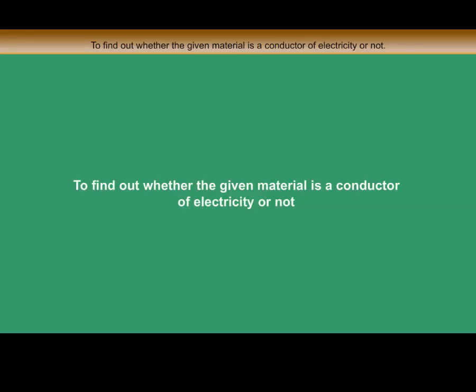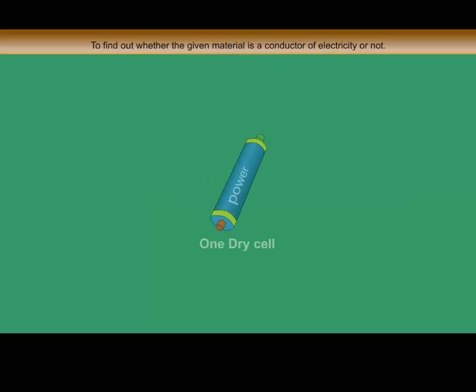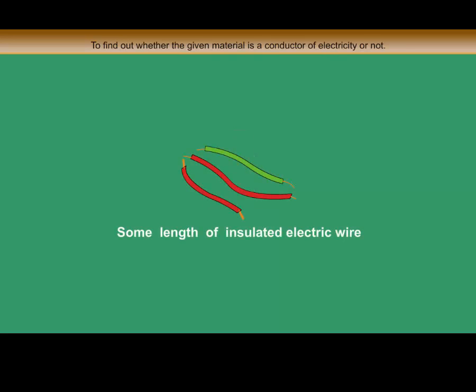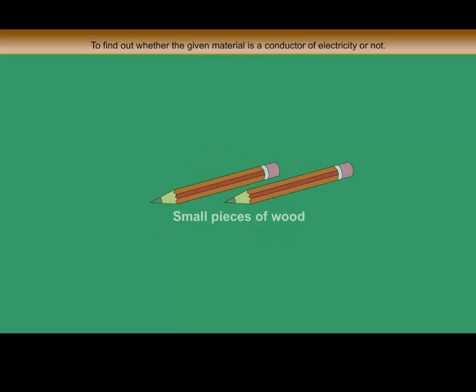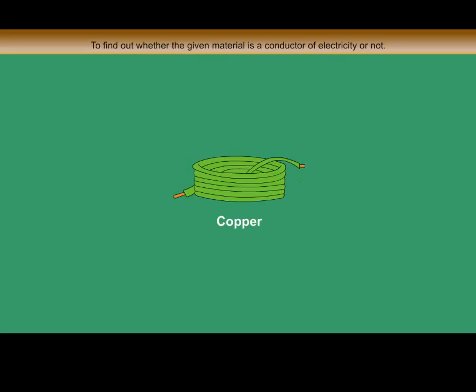To find out whether the given material is a conductor of electricity or not. Things required: one dry cell, a torch bulb, some length of insulated electric wire, small pieces of wood, rubber, plastic, copper, iron and aluminium.